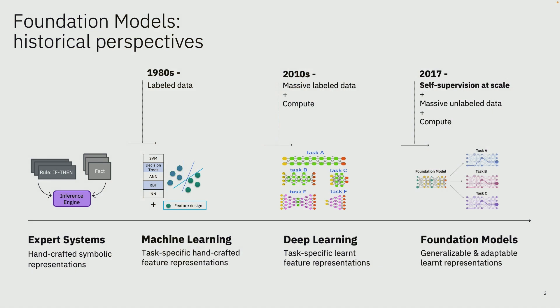In terms of foundation models, the way you can look at it from a historical point of view is that it really started off in the 1950s and 60s as expert systems, and then got into the era of machine learning. That's when we started to have quite a bit of data, and starting from the 2000s, having a lot of data because of social media and the internet of things. But still, a lot of data had to be manually labeled, which is quite expensive. And then you need quite a bit of compute if you go down the path of deep learning.